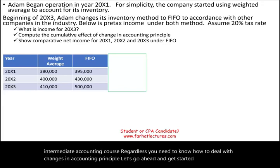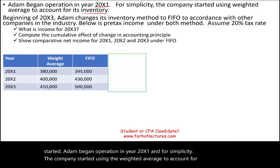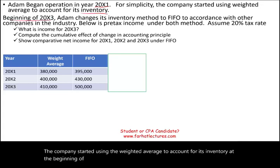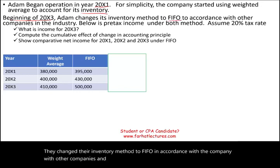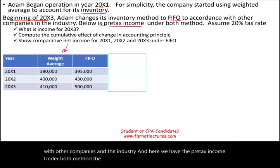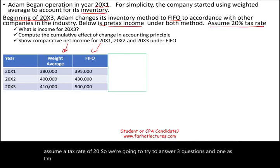Adam began operations in year 20x1, and for simplicity the company started using the weighted average method to account for its inventory. At the beginning of year 20x3, they changed their inventory method to FIFO in accordance with other companies in the industry. Here we have the pre-tax income under both methods — the weighted average they used previously and FIFO — and we assume a tax rate of 20%. We're going to answer three questions, and as I answer them I will also explain changes in accounting principle.